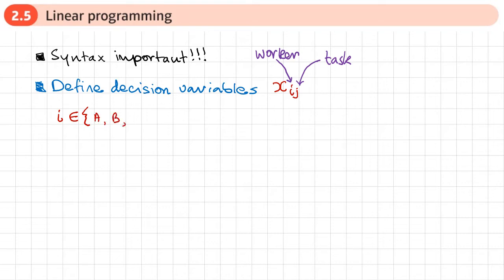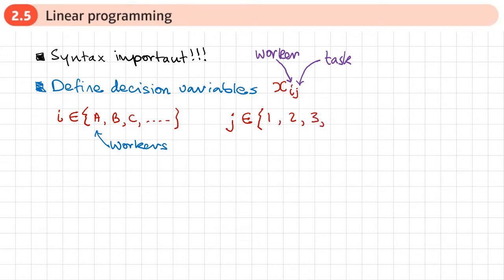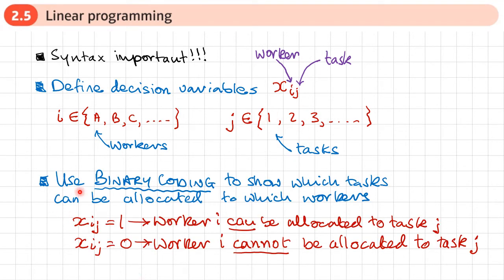For example, workers A, B, C and so on — these letters represent our different workers. We need to do the same for J, saying what values J can take, representing our tasks. The tasks may be task 1, 2, 3 and so on depending on the question. We define the set of values for I (workers) and J (tasks).